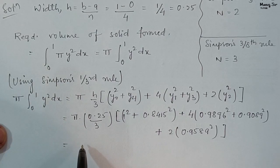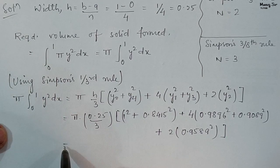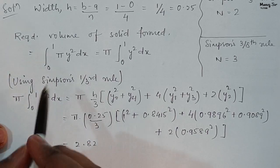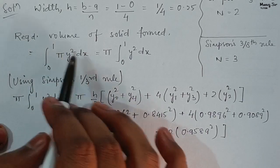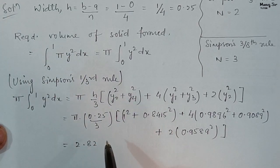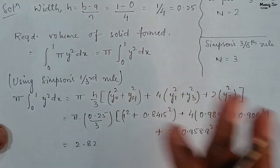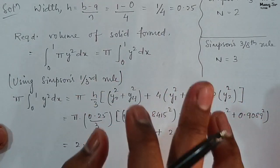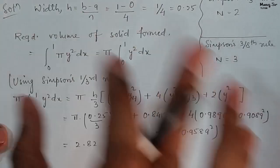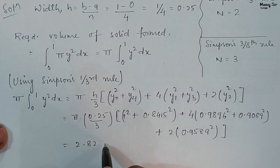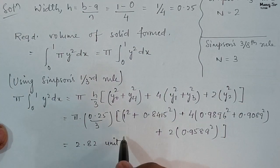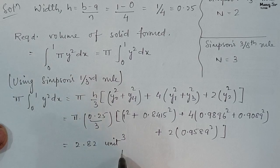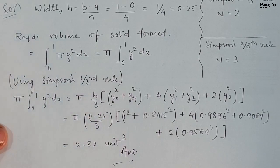On calculating, you will get the volume of the solid formed as approximately 2.82. No units are given in the problem, so we write the answer as 2.82 cubic units. That is the final answer.